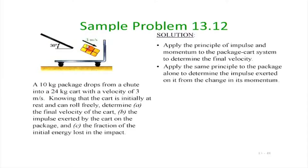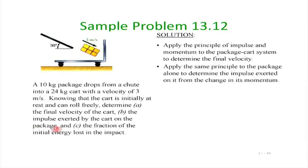The next problem: a 10 kg package drops from a chute into a 45 kg cart with a velocity of 3 meters per second at 30 degrees. The cart is initially at rest and can roll freely. Determine the final velocity of the cart, the impulse exerted by the cart on the package, and the fraction of initial energy lost on impact.